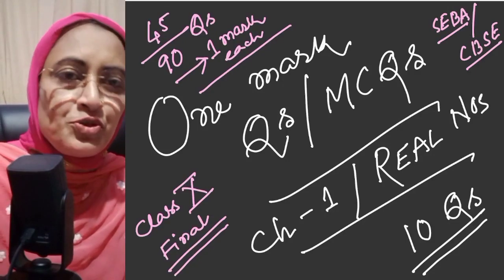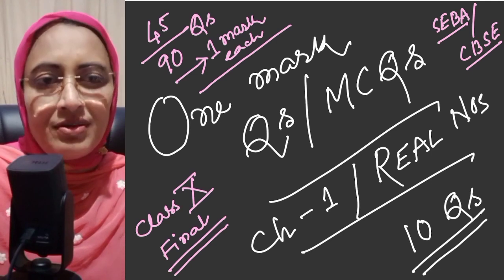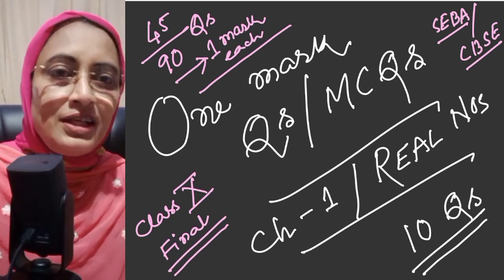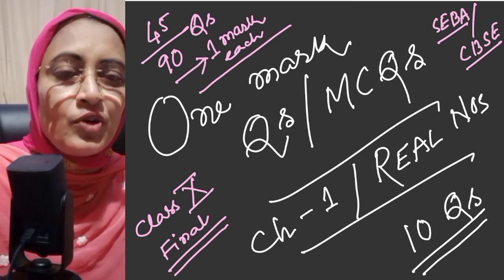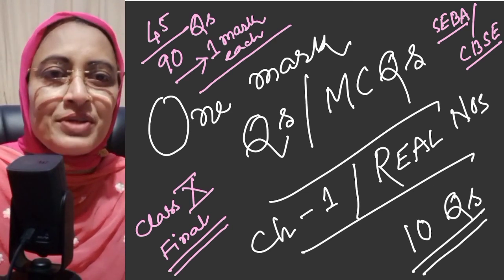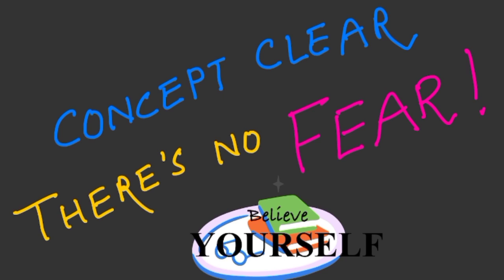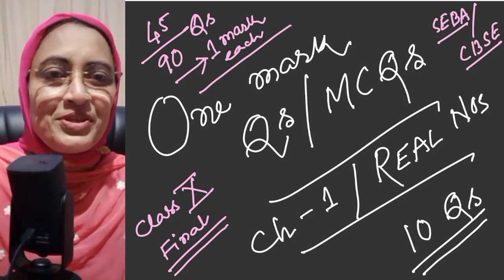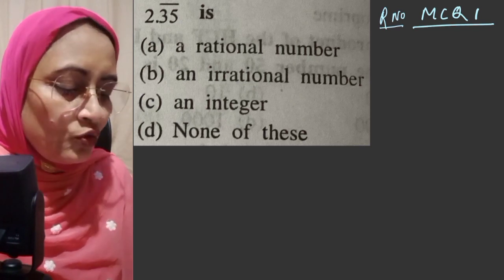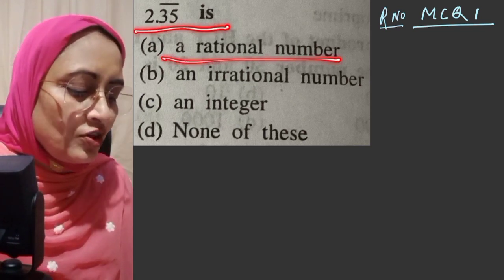Hello my dear MaySquad, my name is Shufiya and today we are going to do MCQs on real numbers — our first chapter. Let's start with MCQs. Concept clear, there is no fear! Question number 1: 2.35 bar is a — rational number, irrational number, integer, or none of these?